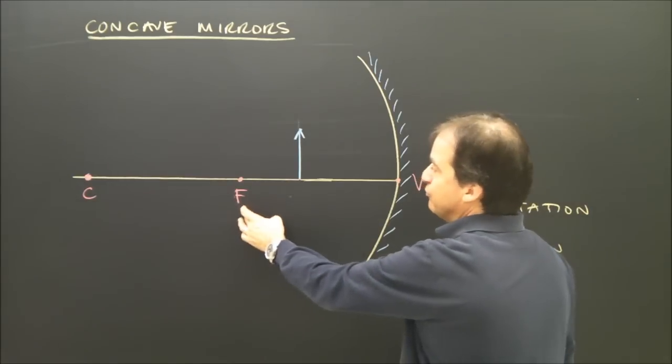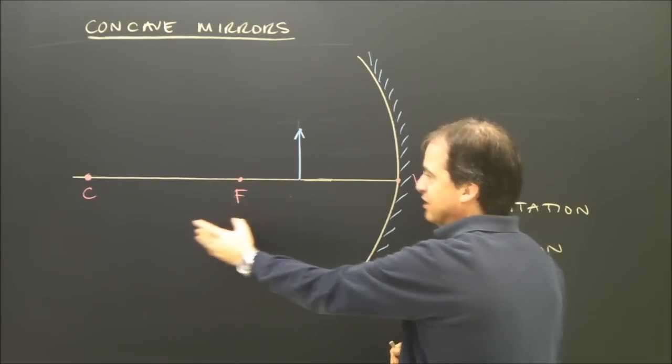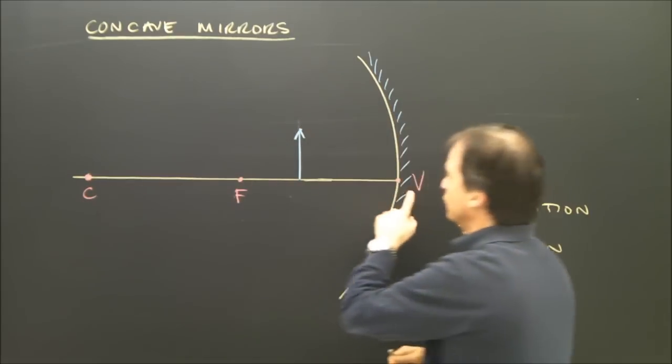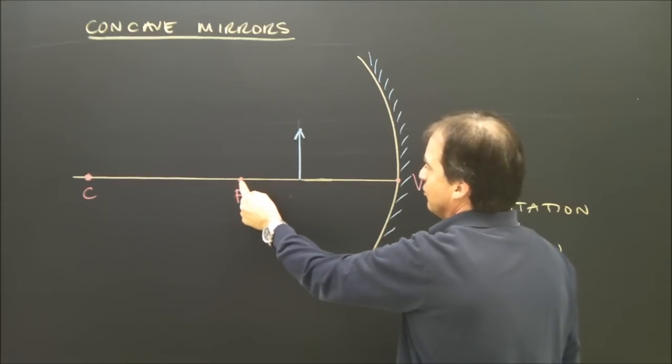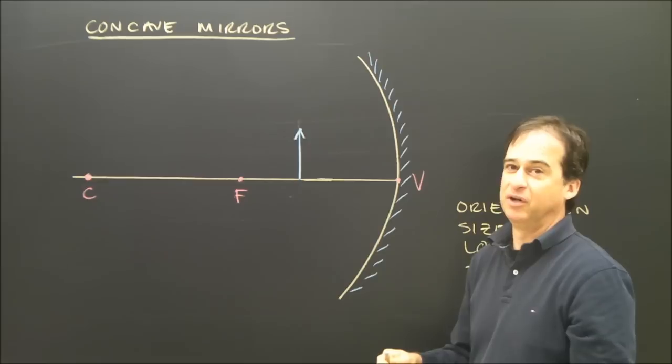In this case, here's the focal length, here's the focus, here's the center of curvature, here's our vertex, here's our mirror. The object is between the focus and the vertex, so it's very close to the mirror.